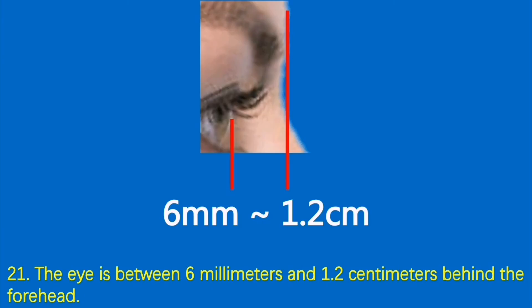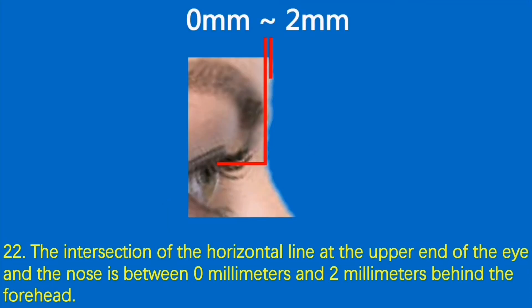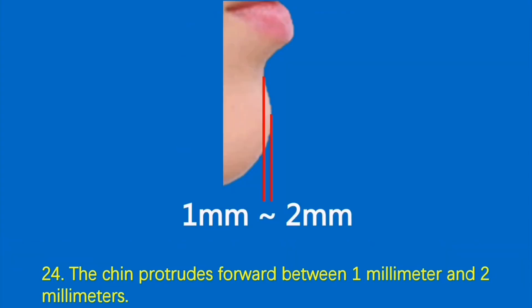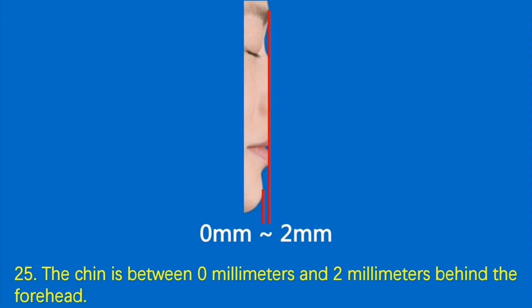21. The eye is between 6 mm and 1.2 cm behind the forehead. 22. The intersection of the horizontal line at the upper end of the eye and the nose is between 0 mm and 2 mm behind the forehead. 23. The intersection of the horizontal line at the lower end of the eye and the nose is between 2 mm and 4 mm ahead of the forehead. 24. The chin protrudes forward between 1 mm and 2 mm. 25. The chin is between 0 mm and 2 mm behind the forehead.